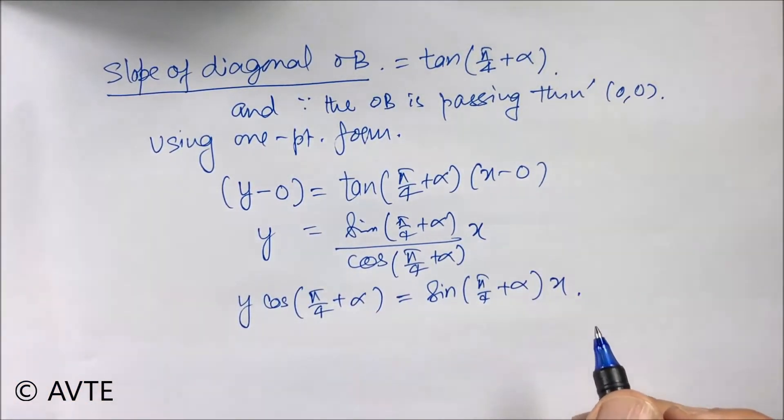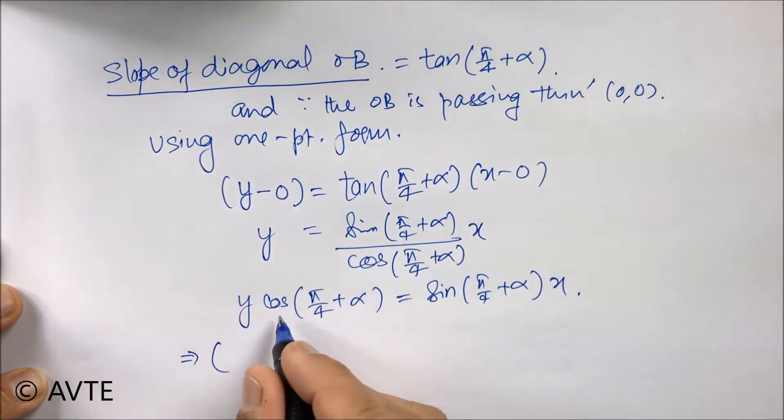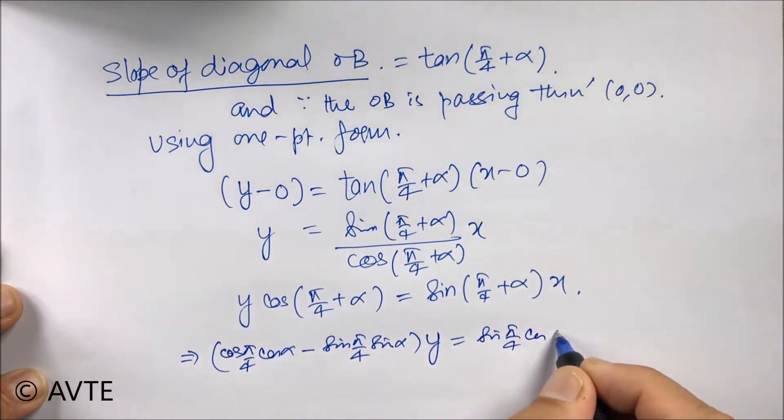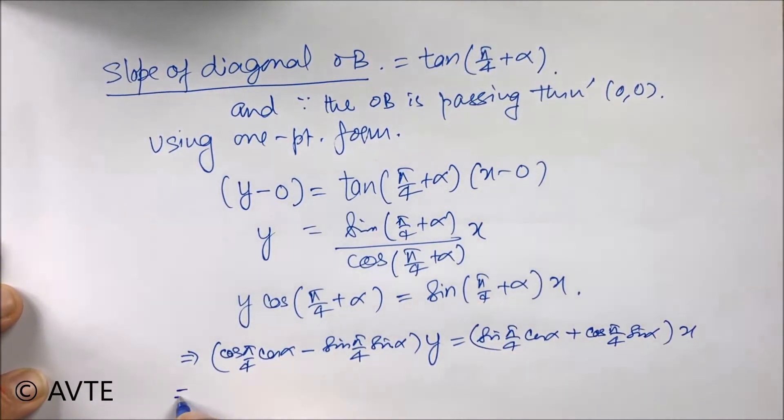There are various methods. Instead of breaking tan to sin by cos, one could open tan a plus b using tan a plus tan b. And now this is cos a plus b which is cos a cos b minus sin a sin b times of y, and this is sin a cos b plus cos a sin b into x.